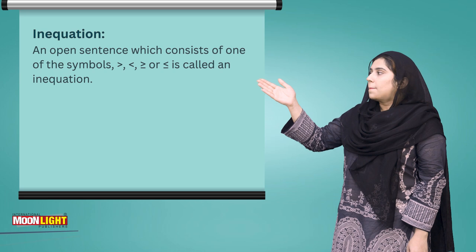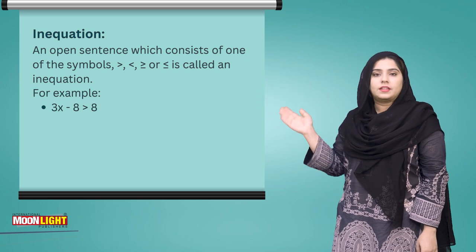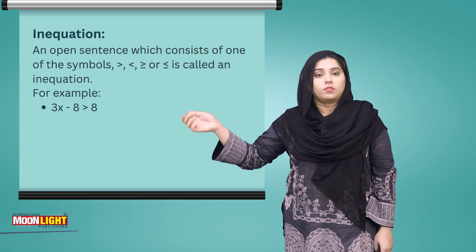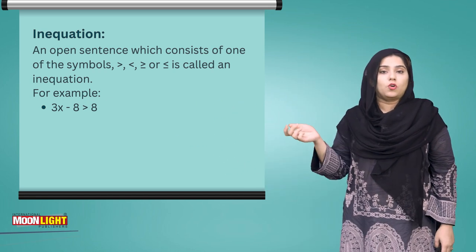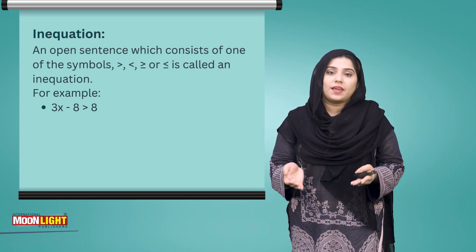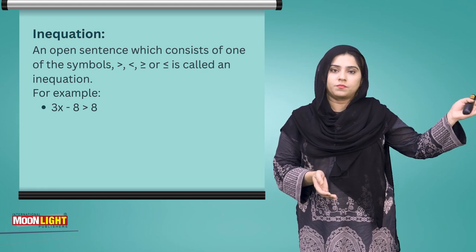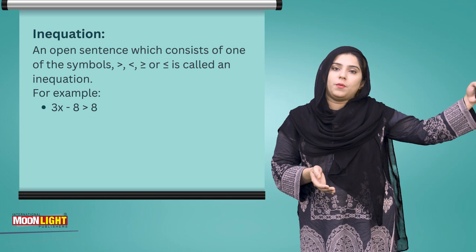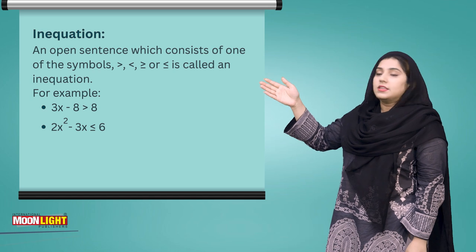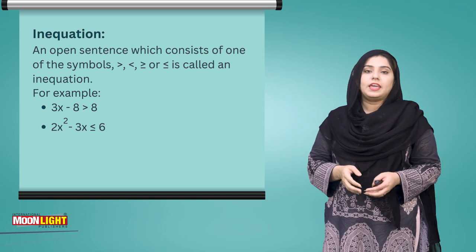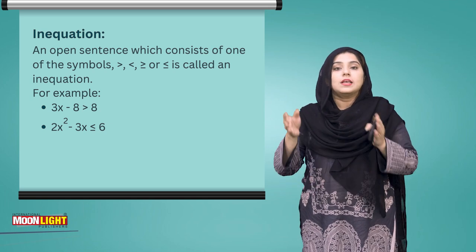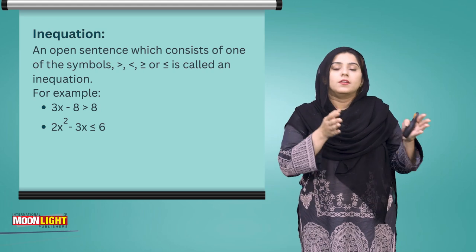For example, they will give you 3x minus 8 is greater than 8. Students, here are the possibilities that if I have any variable, I will multiply by that number, and I will minus 8, it will be greater than or equal to 6. That means that if you have the answer, you can use a possibility which can be 6 or greater than 6.